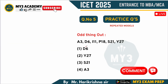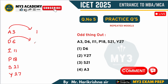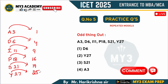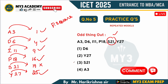In this question they give: A3, D6, I11, P18, S21, Y27 — find the wrong term. A is the 1st alphabet, D is the 4th, I is the 9th, P is the 16th, and Y is the 25th. Looking at the numbers: 25, 16, 9, 4, 1 — all perfect squares. But 19 is not a perfect square, so the wrong term is S21. Mark the answer as option 3.